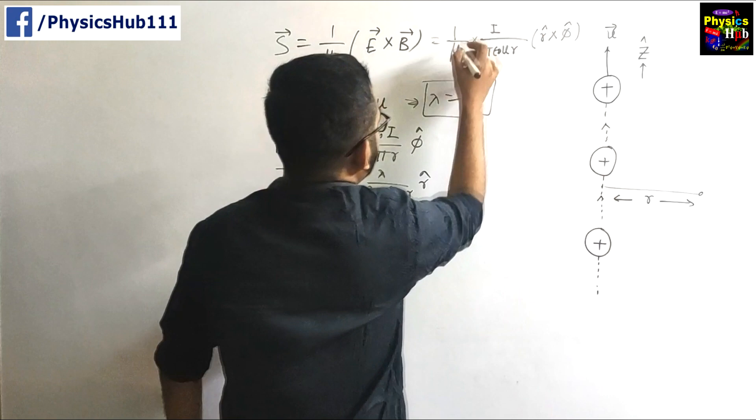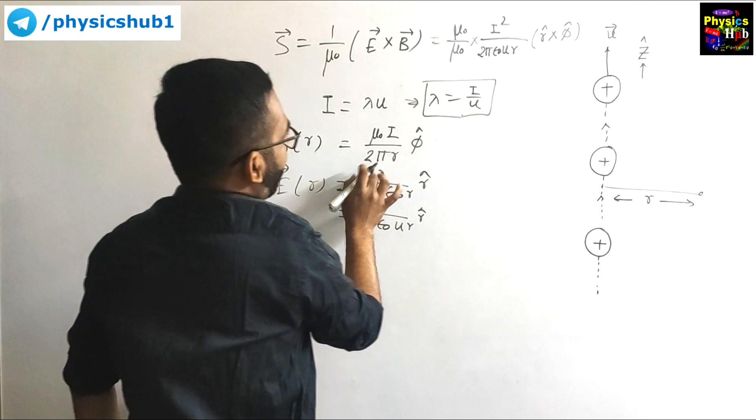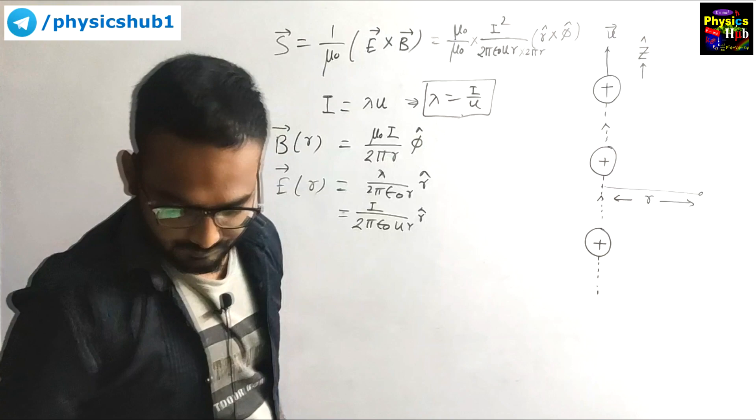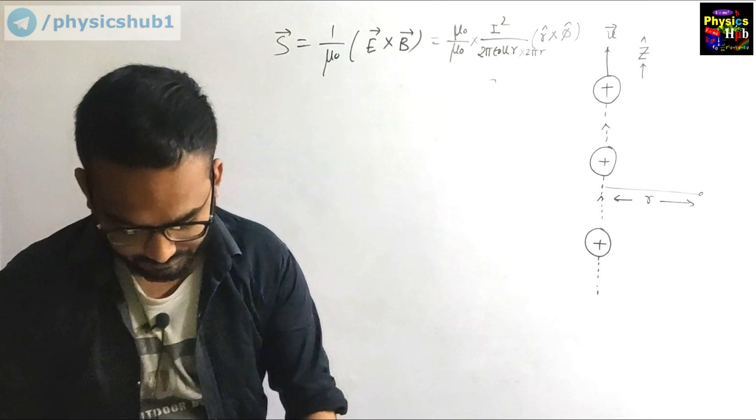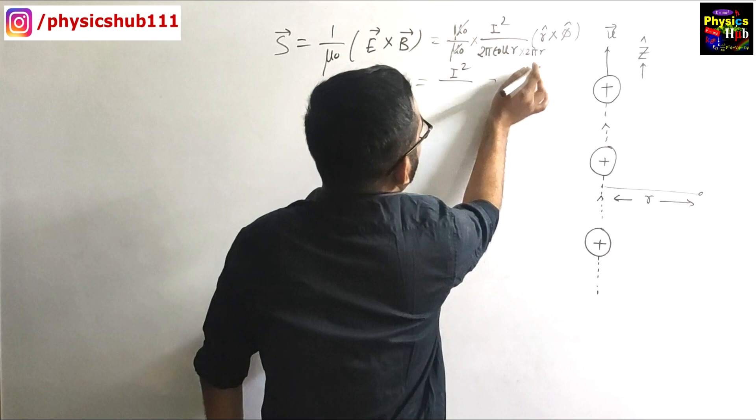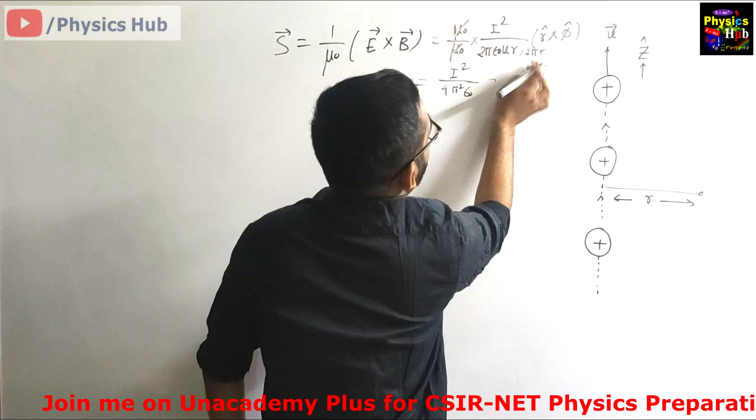If you consider mu naught into I, so mu naught I, it becomes I squared divided by 2 pi r. So let's multiply by 2 pi r. If you further calculate what will you get? This will give you I squared mu naught, mu naught gets cancelled, 2 into 2 is 4 pi squared epsilon naught, 4 pi squared epsilon naught u r squared.